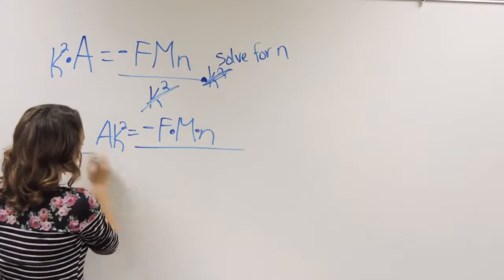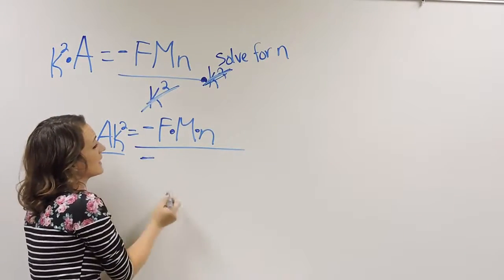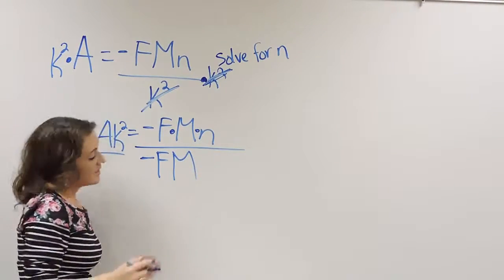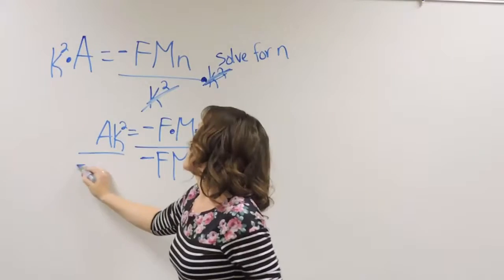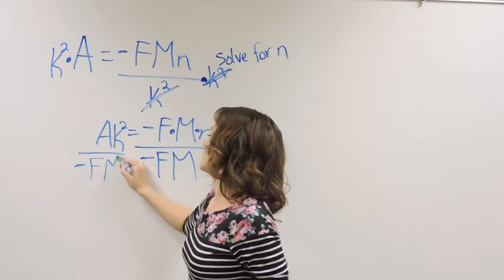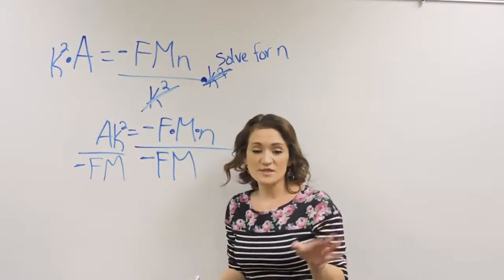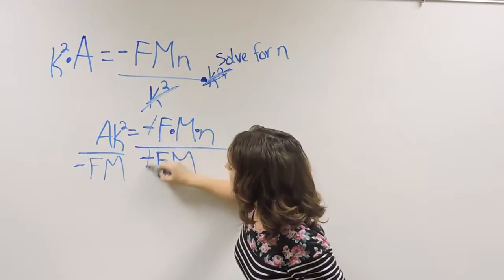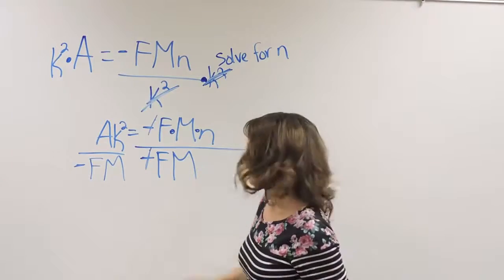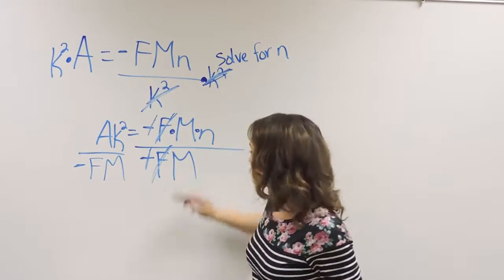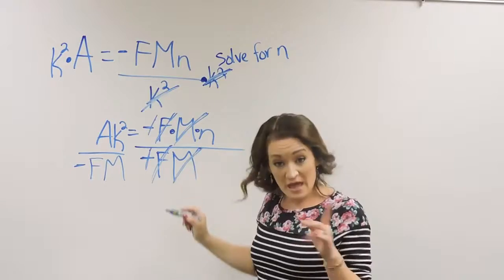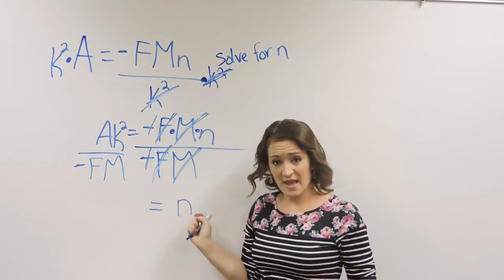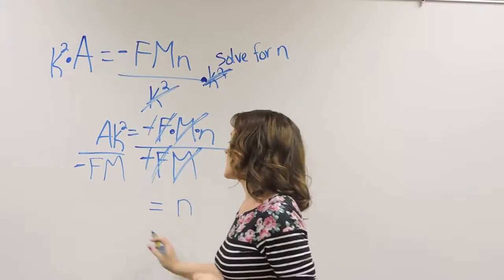So what I'm going to do is I'm going to divide both sides by the negative, by the f, by the m. And remember that what we do to one side, we must do to the other side as well. So when I divide here, notice that a negative divided by a negative cancels. F over f cancels. M over m cancels. So on the right-hand side, all I have left is the n.